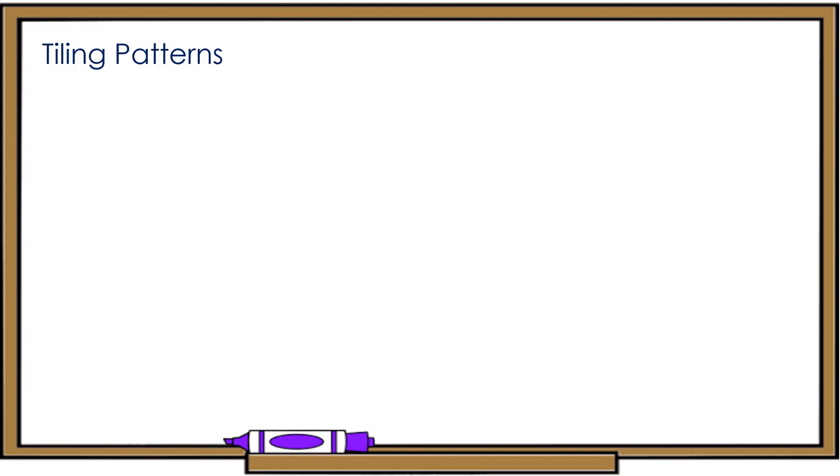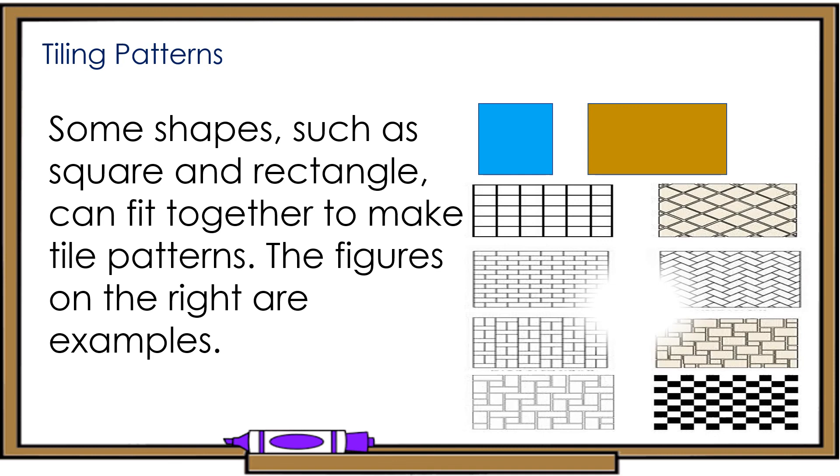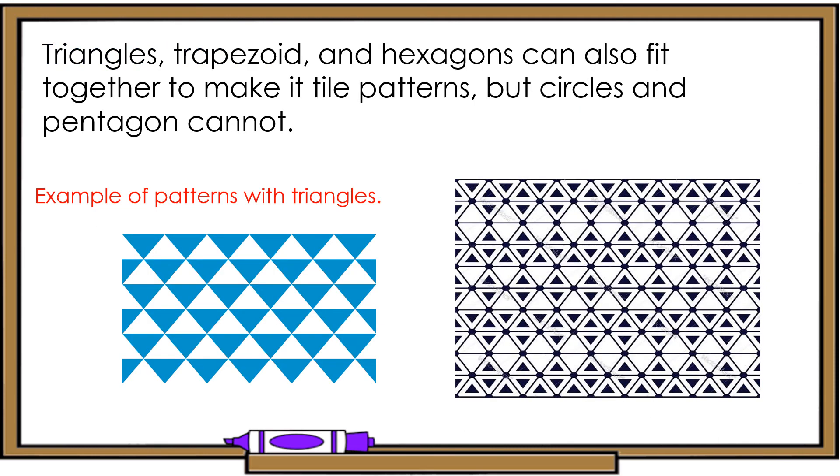Tiling patterns. Some shapes such as square and rectangle can fit together to make tile patterns. The figures on the right are examples. Triangles, trapezoid, and hexagons can also fit together to make tile patterns. But circles and pentagon cannot. These are examples of patterns with triangles.